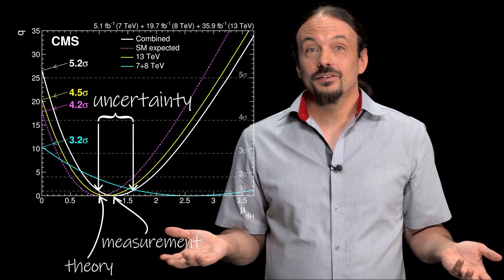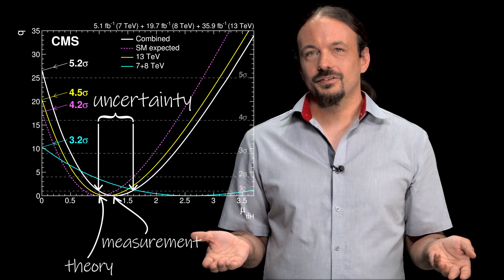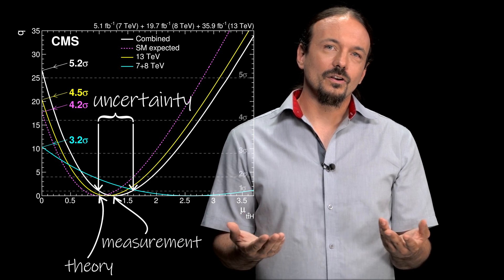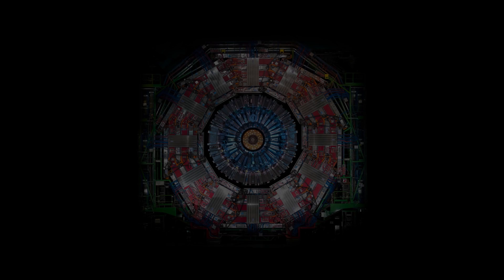So in fact, within the uncertainties, the measurement is so far consistent with theory. But the more collision data we collect, the more precise our result. So with more data, we'll be able to test this agreement with better precision. And if some new discovery is hiding in there, we're now tightening the net.